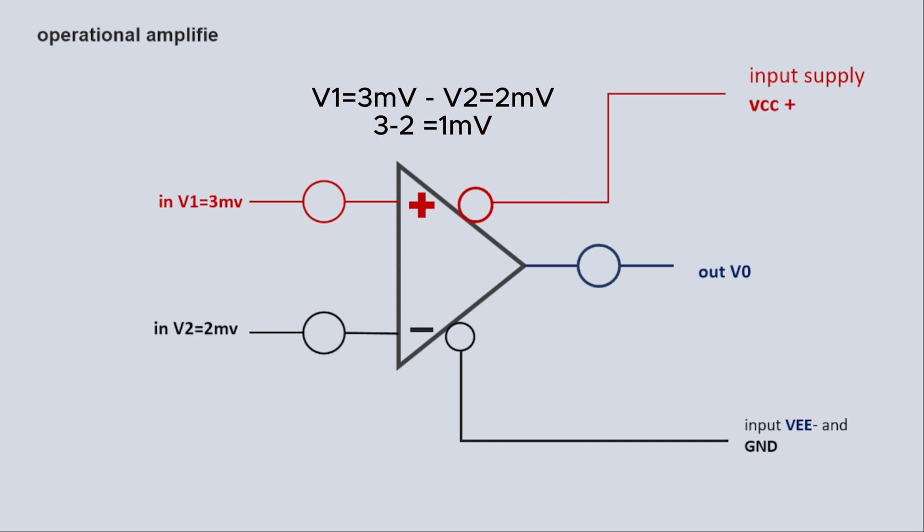For example, we have given a gain of 1000. We will amplify based on that. You can understand this from the formula.